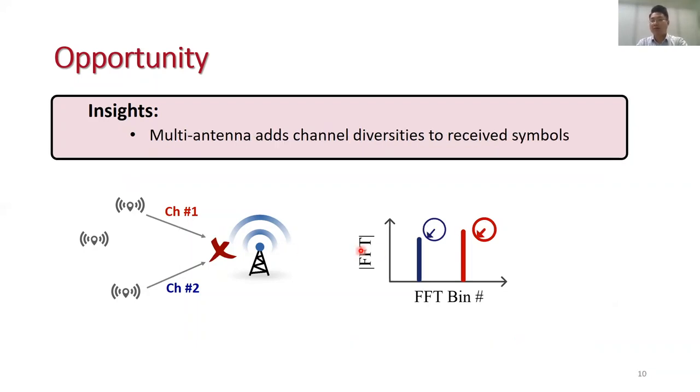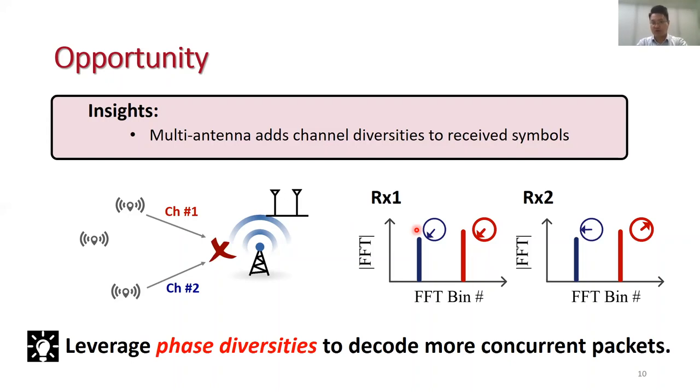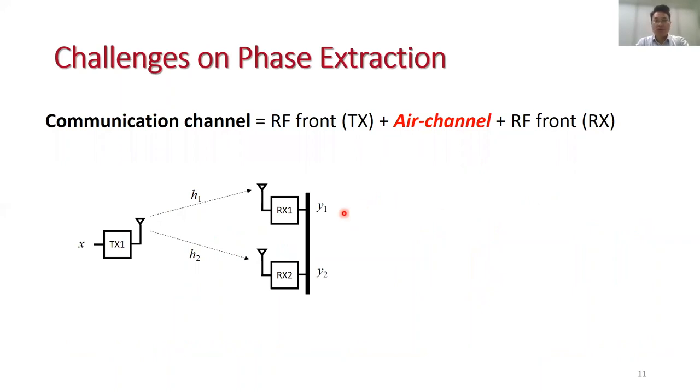We also notice that two packets can probably have the same channel phase. For instance, if the two packets cannot be separated at this antenna, then we can add a new antenna which can receive the two packets with different channels. Basically, we can create channel diversities by adding more antennas to decode more packets.